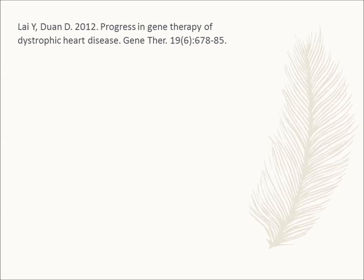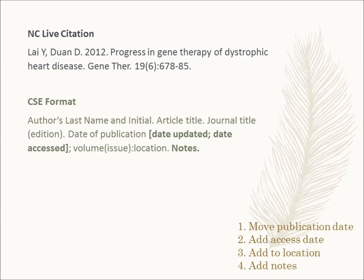Here is the NC Live generated citation — I copied and pasted this directly from NC Live. Unfortunately, this citation doesn't provide all of the necessary information for the CSE bibliography. It is a strong start, though, and there are only a few more elements needed. If we look at the generated citation compared to what information needs to be included, the date of publication is in the wrong spot and three elements are missing: the access date, URL, and notes.